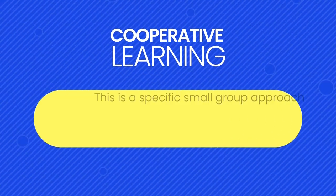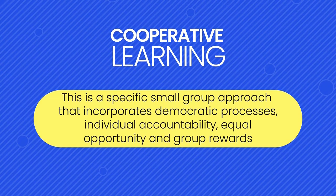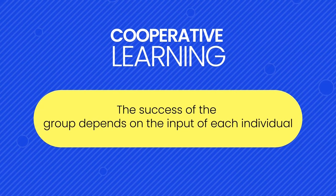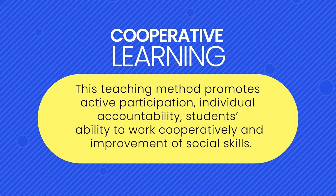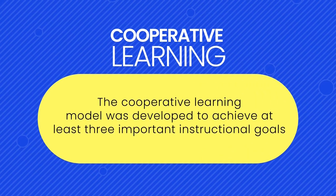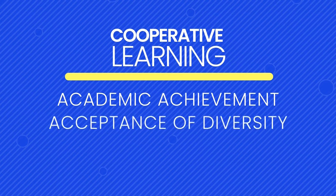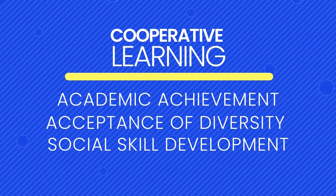Next is cooperative learning. This is a specific small group approach that incorporates democratic process, individual accountability, equal opportunity, and group rewards. Cooperative learning involves small heterogeneous student groups working together to solve a problem or complete a task. All students in the group must actively participate, with each student maintaining some interdependence. The success of the group depends on the input of each individual. The cooperative learning model was developed to achieve three important instructional goals: academic achievement, acceptance of diversity, and social skill development.